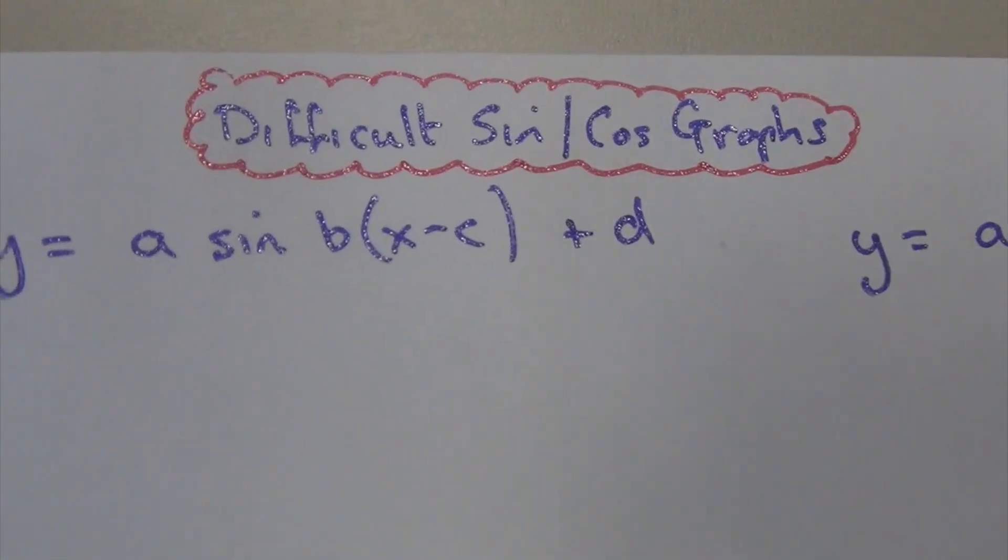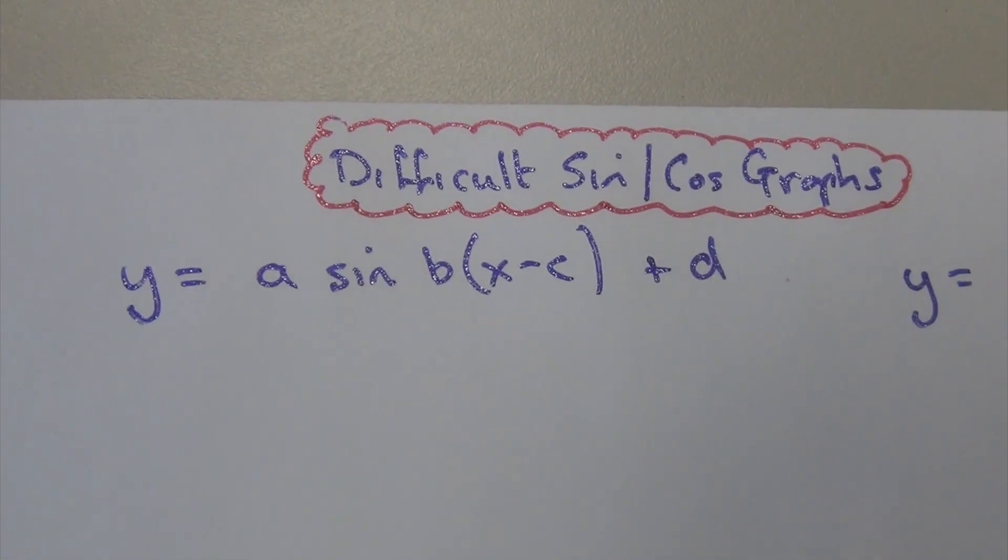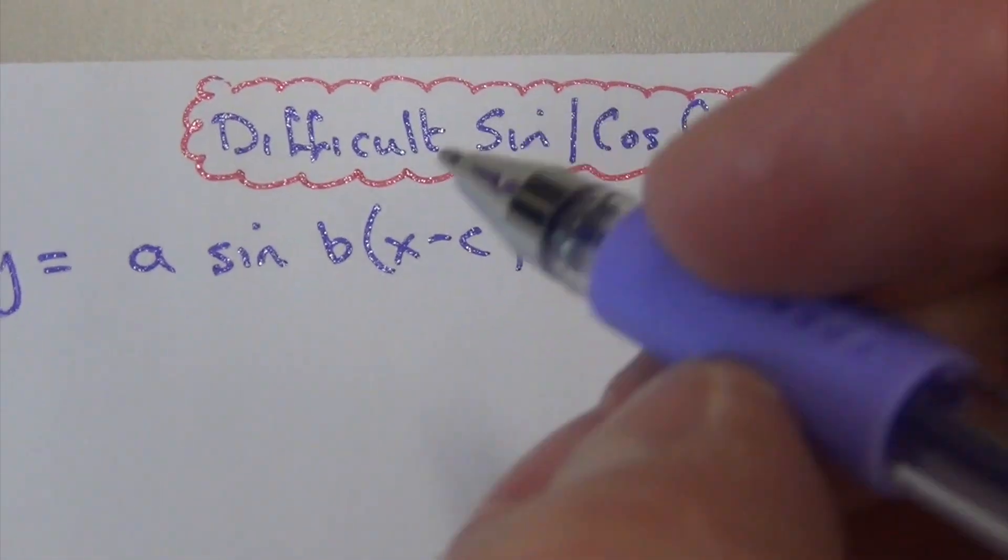We're going to look at a little more difficult sine and cosine graphs now. Look at this thing here. We know that A is our amplitude.